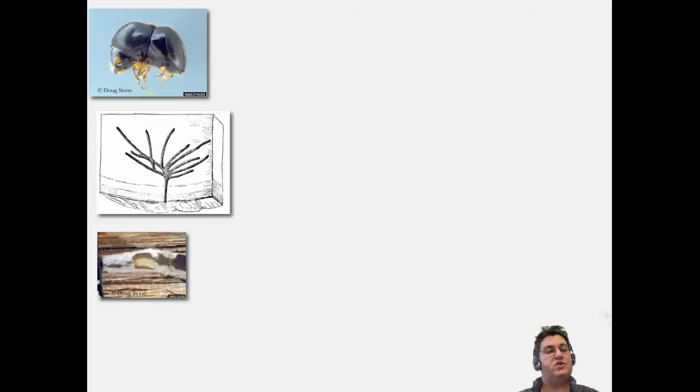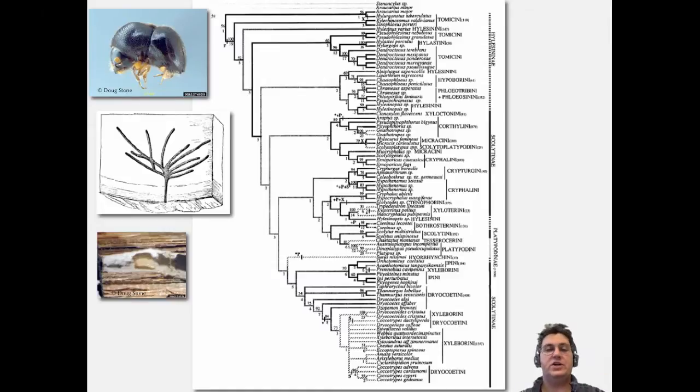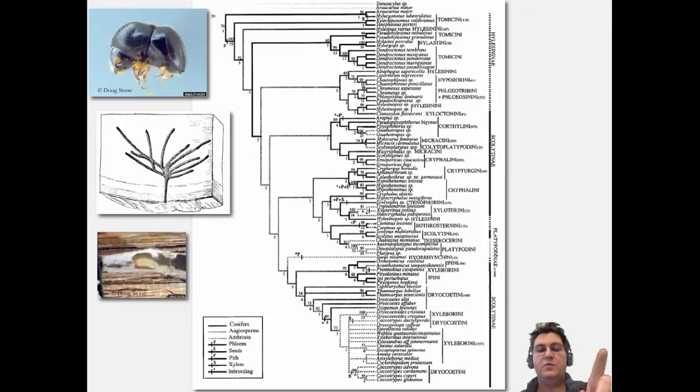The cool thing about phylogenetics is you can take this basic information, plus some DNA sequences, to build a phylogeny, an evolutionary tree, and use that to understand much, much more than you could by just observing species in the present day. For example, this tree maps on what groups of plants these beetles are on or consuming.